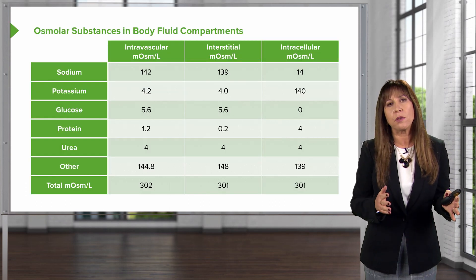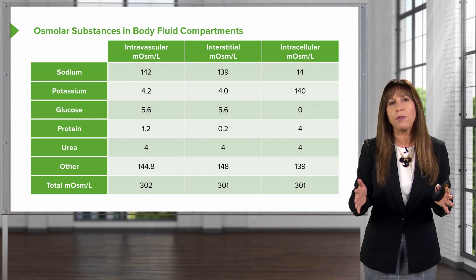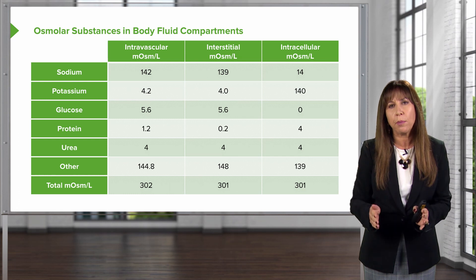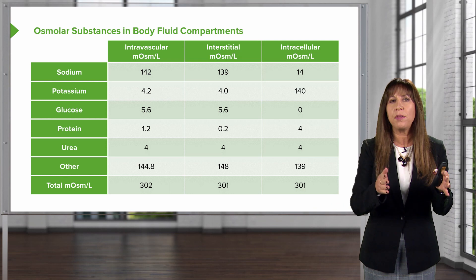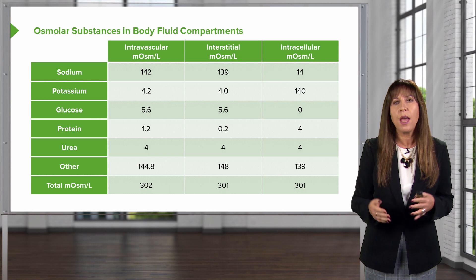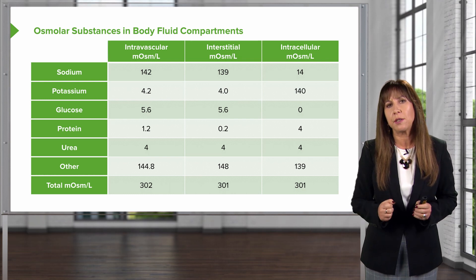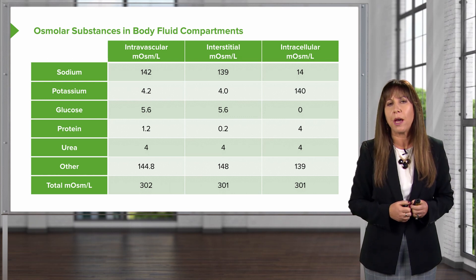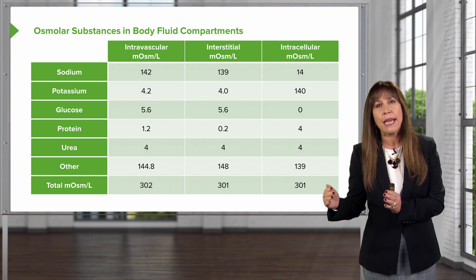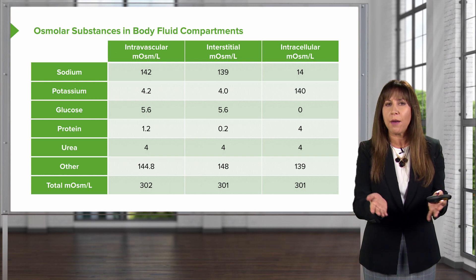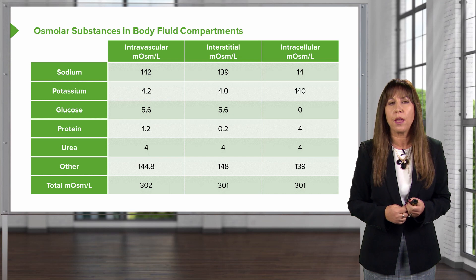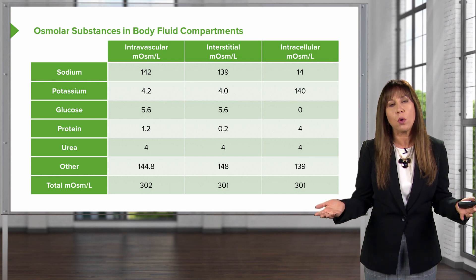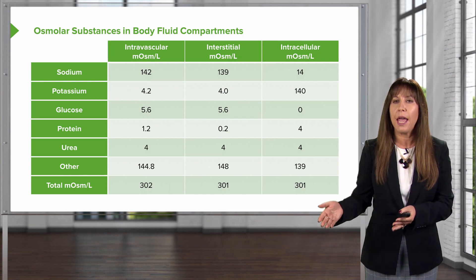Let's review some osmolar substances within our body fluid compartments. In this table, pay attention to the intravascular, interstitial, and intracellular compartments — the intravascular and interstitial together make up our extracellular fluid volume. Sodium is primarily located within the extracellular fluid compartment, highest in the intravascular volume at 142 millimoles per liter. Potassium is highest in the intracellular compartment, with very small amounts in the extracellular fluid. Urea is equally distributed among all compartments, and the total osmolar concentration is equal across all three compartments.